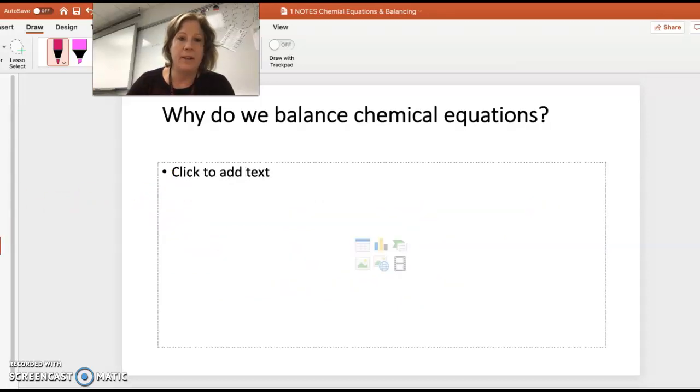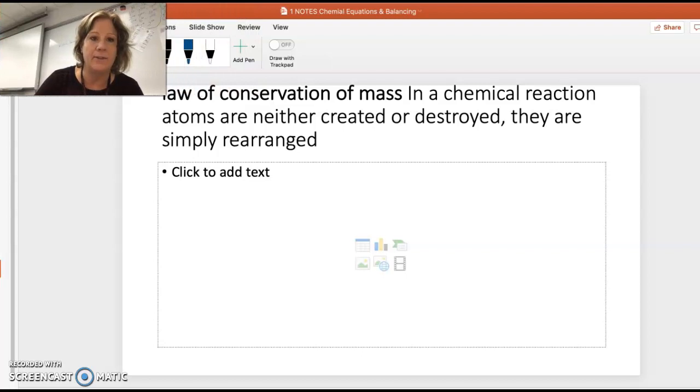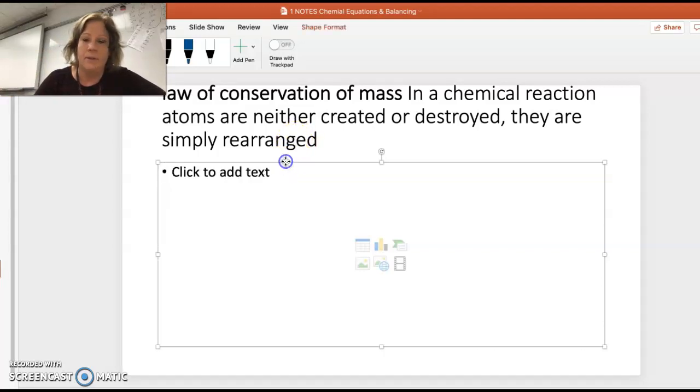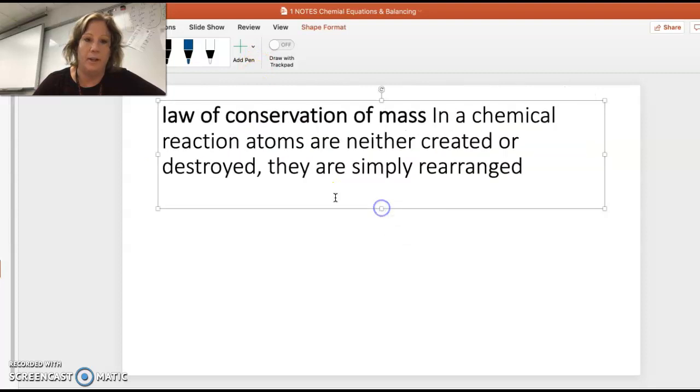Balancing equations - you've done this in ninth grade. Why do we do it? The law of conservation of mass. We can't create or destroy atoms, they just simply rearrange. We break bonds, we form new bonds, and that is why we balance them. You're going to see that we're balancing them also because we're going to be doing calculations where it's important that we have it balanced so we know how many moles we have.